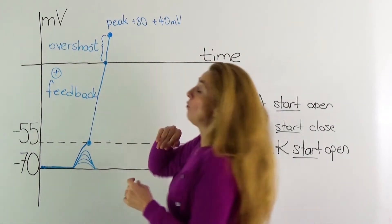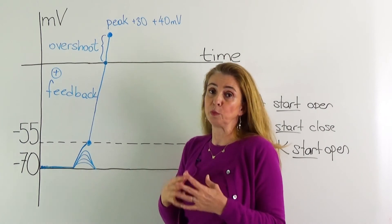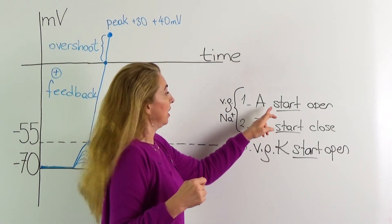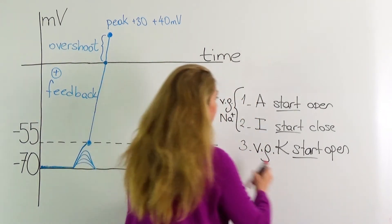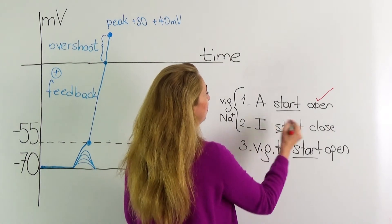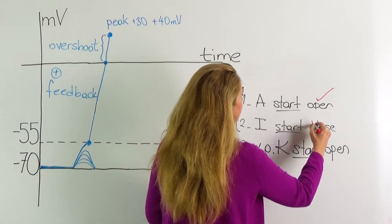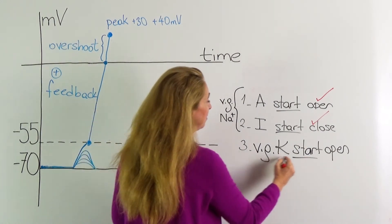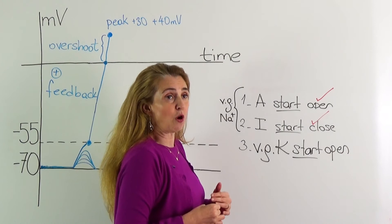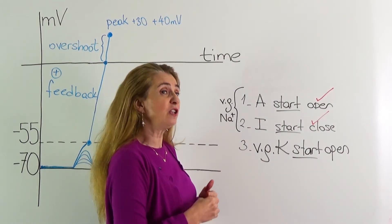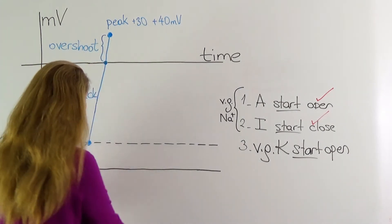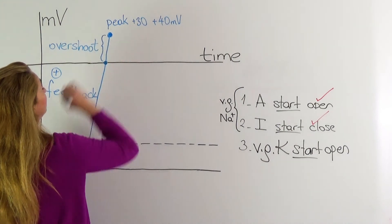This is one event happening at the peak of the action potential, but there is a second event. Until now we talked about the complete opening of the activation gates and the complete closure of the inactivation gates. What about voltage-gated potassium channels? They start to open at exactly the same threshold as the voltage-gated sodium channels, but they are relatively slow in their gating action, and the voltage-gated potassium channels open only at the peak of the action potential.